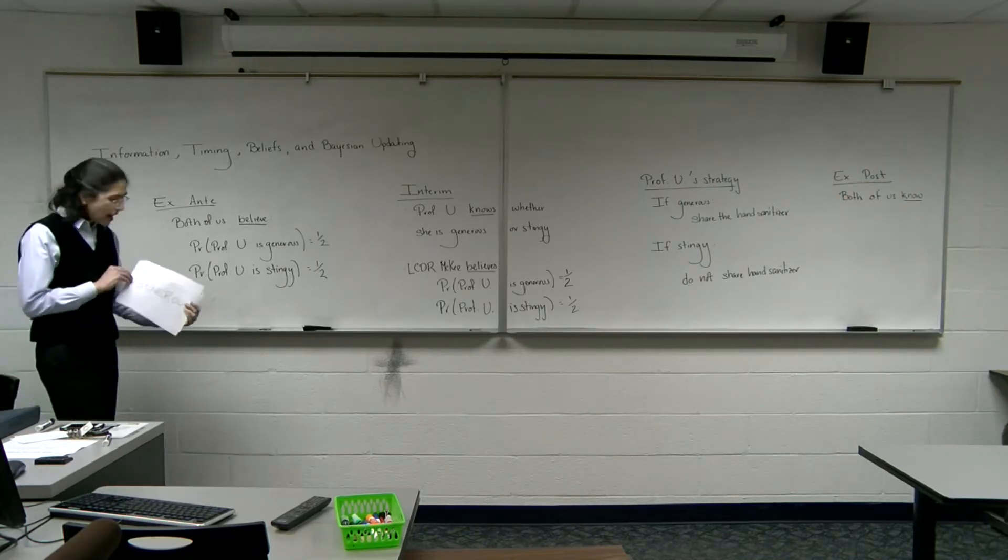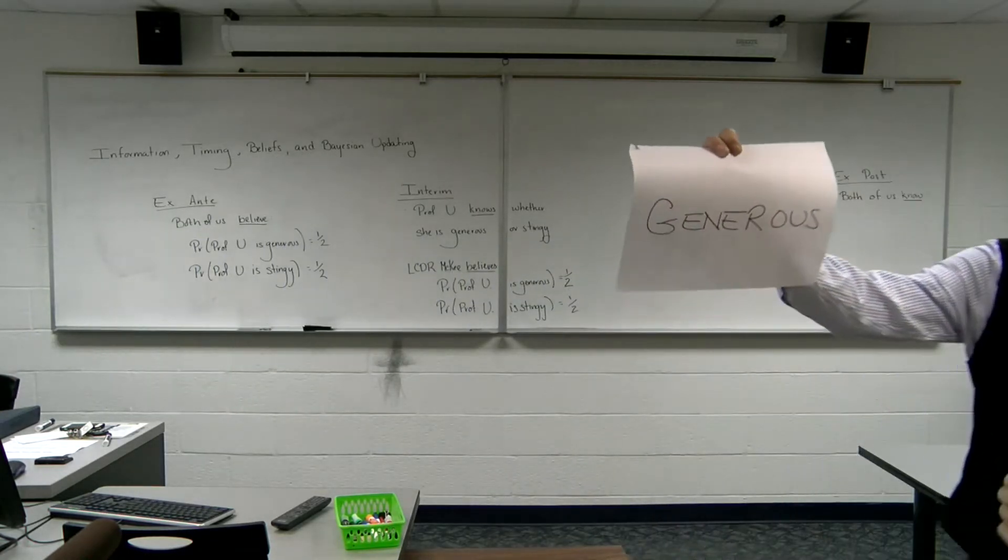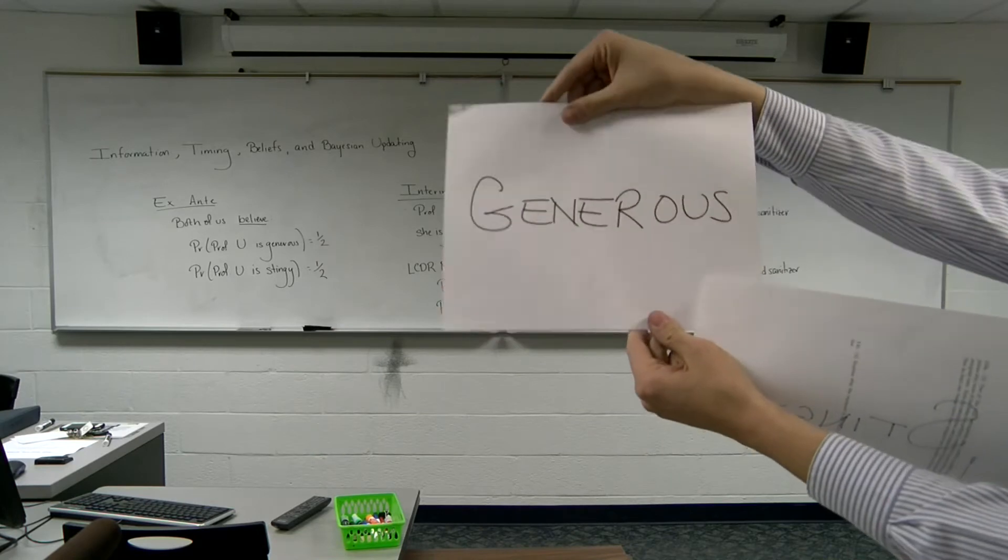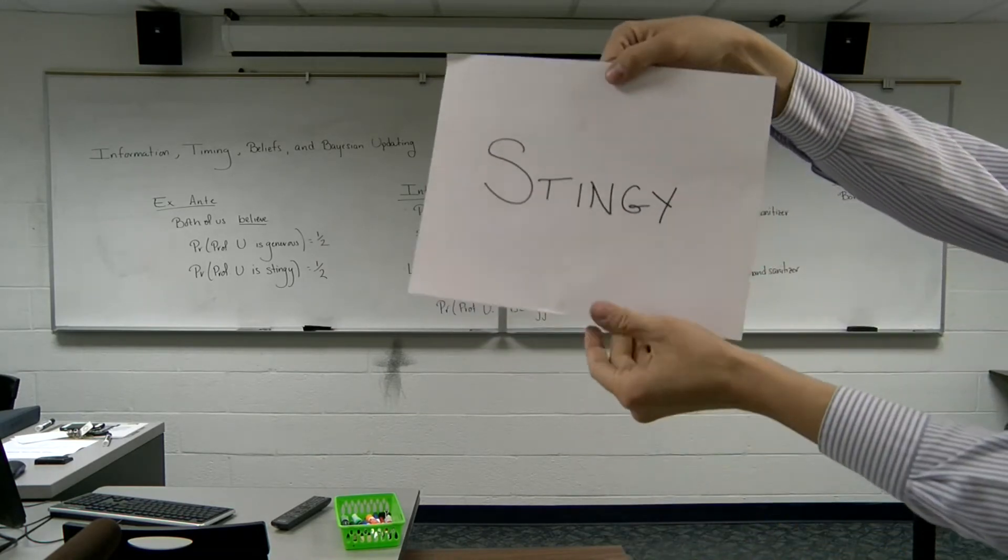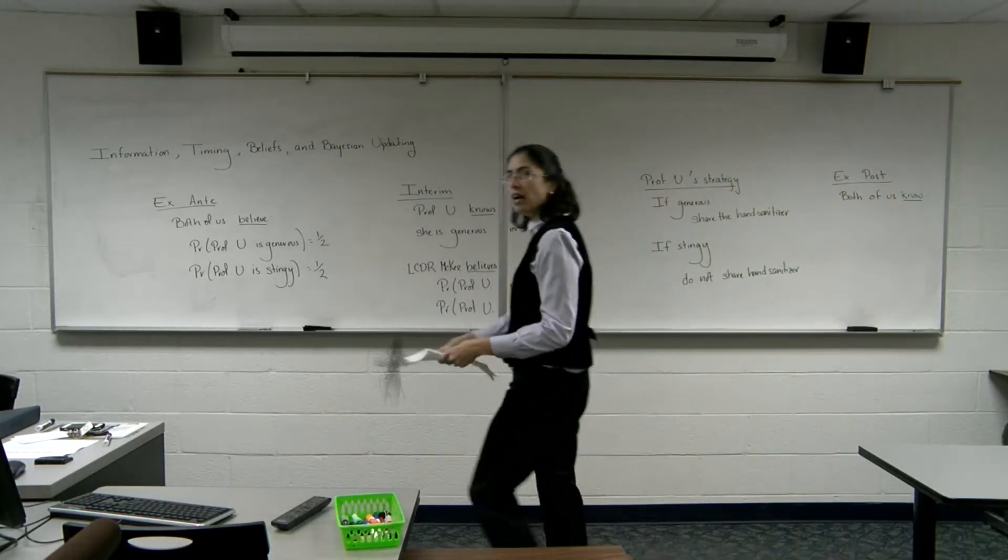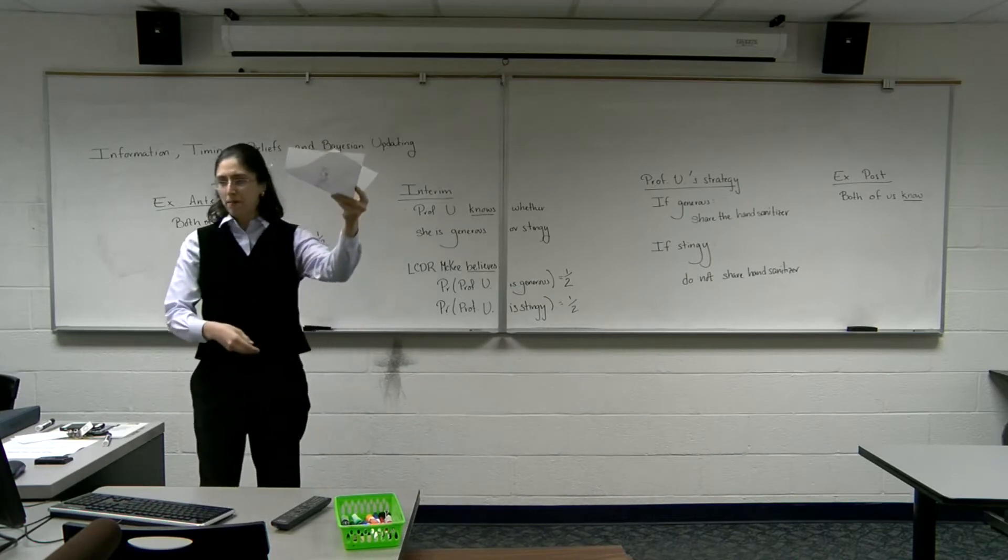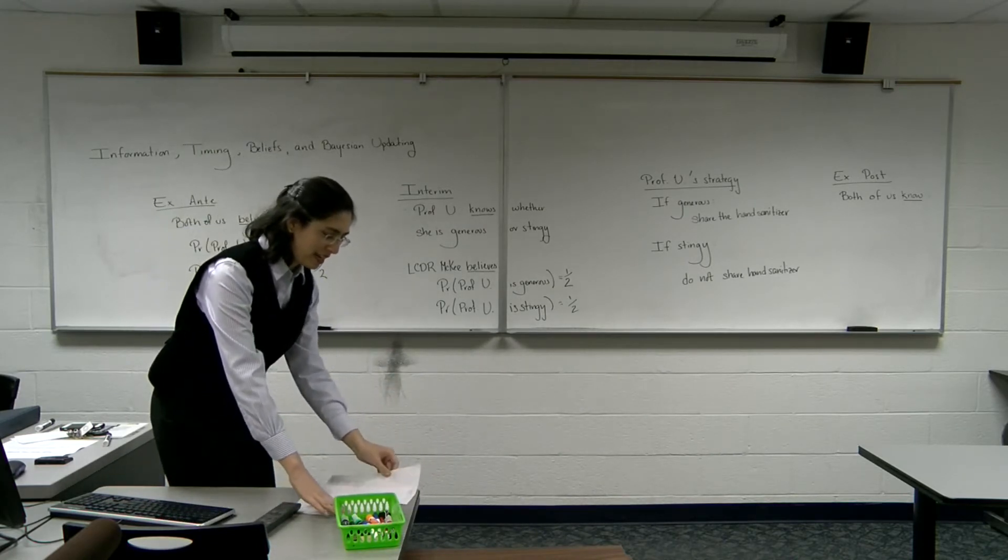So here's the game. I can be one of two types of player. I can be a generous player, or I can be a stingy player. And we don't know yet which one I am. I'm going to put the paper flat on the table so that we can't really see what I'm doing.